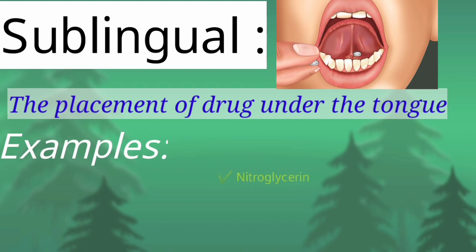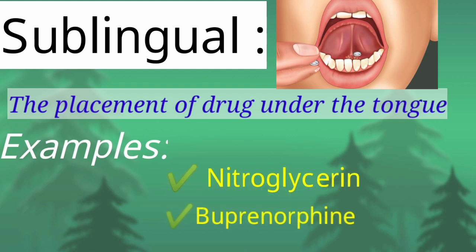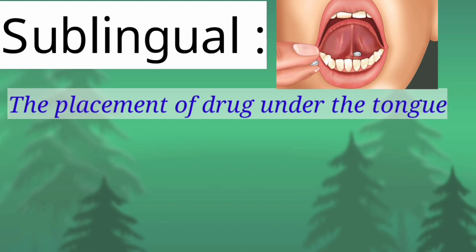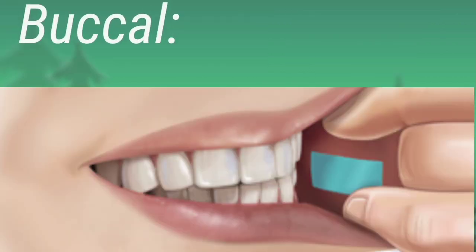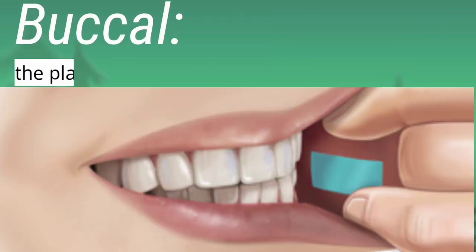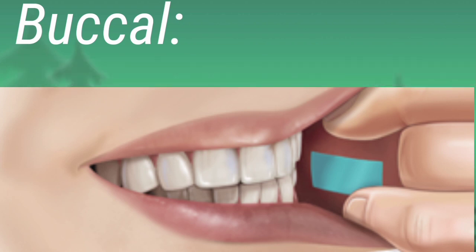The sublingual route is the route in which the drug is placed just beneath the tongue. Drugs administered sublingually include nitroglycerin and buprenorphine. The buccal route is the route in which the drug is placed just between the gums and the cheek.